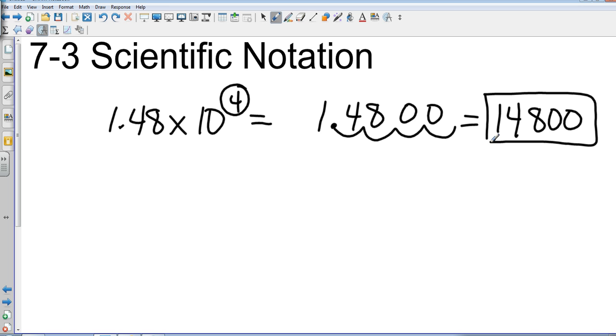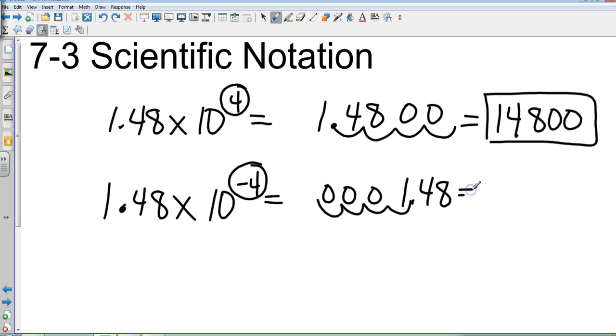Now, let me take a look at that same example. I'm going to do 1.48, but I'm going to multiply it by a power of negative four. So I'm going to do the same step, 1.48, and I'm going to move that out just a little bit. And I notice that's a negative exponent, so that means I'm going to move it four spaces to the left. 1, 2, 3, 4. Filling in everything with zeros. So that gives me an answer. I have 0.000148.